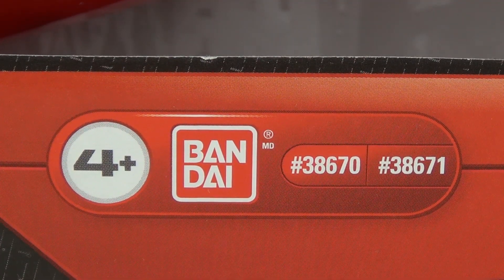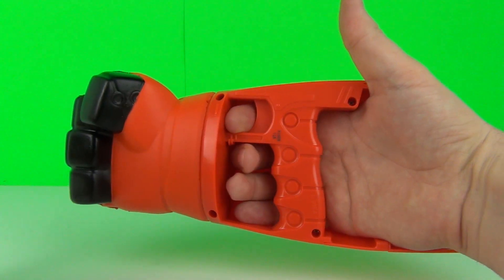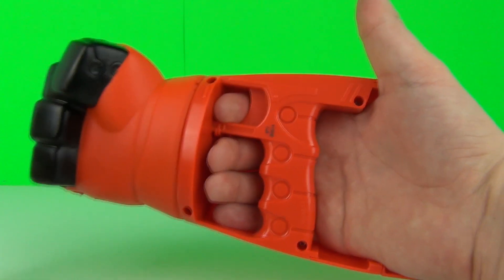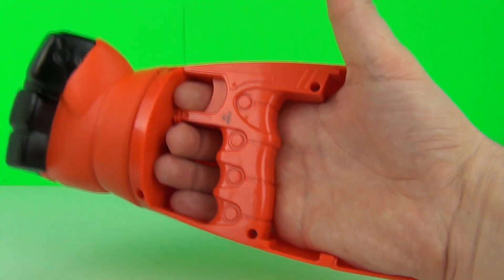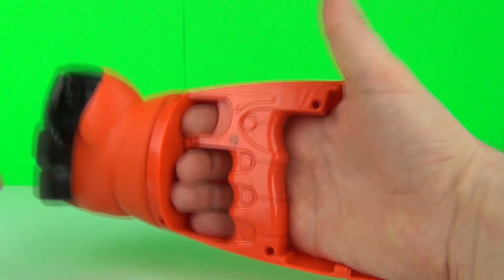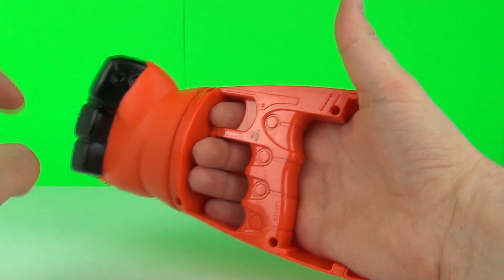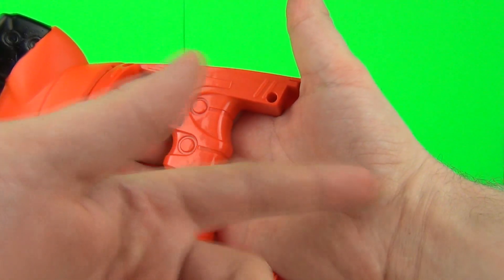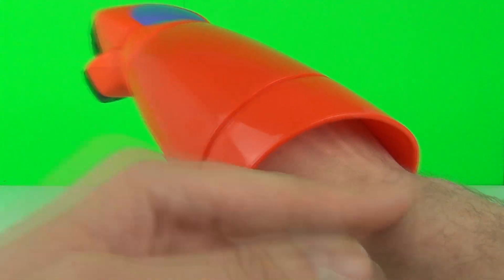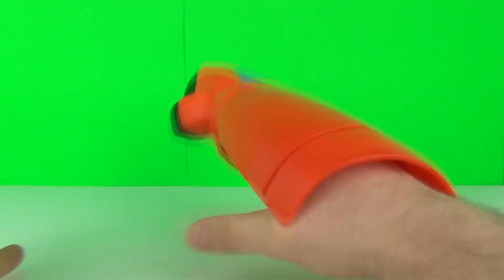Here it is guys, the Baymax Rocket Fist. It looks absolutely ridiculous on me because my hand is huge and this is supposed to fit a younger child. If you are a younger child this will probably fit a lot better and come up to the wrist area, but as I have silly big adult hands it looks a bit stupid.